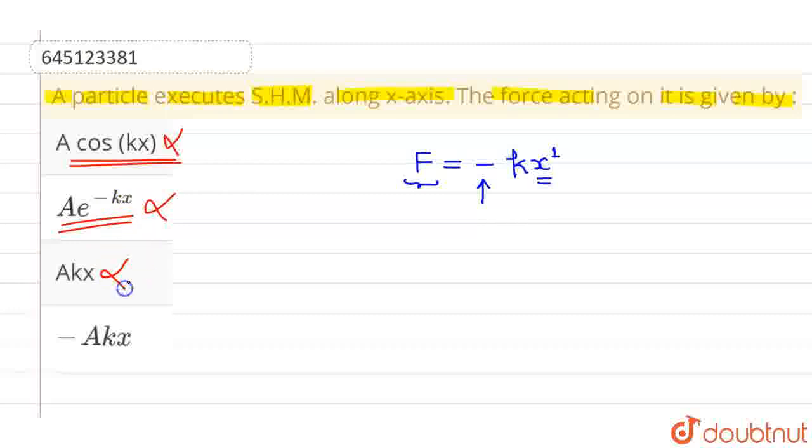Similarly, Akx cannot be correct. This particular force cannot be positive for x negative and negative for x positive. So this again cannot be the force.